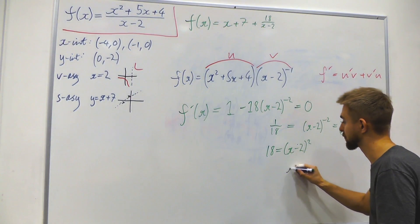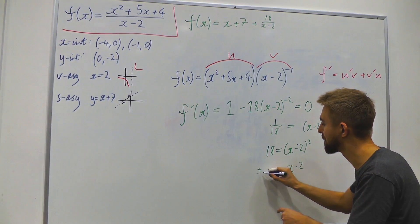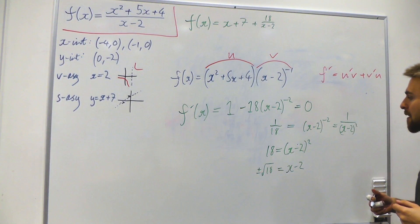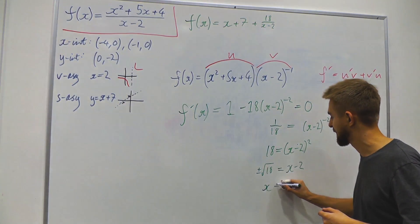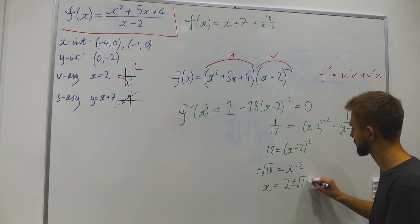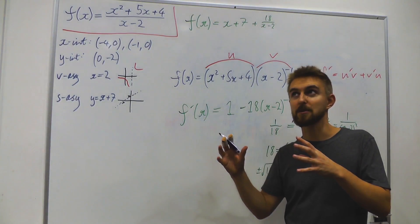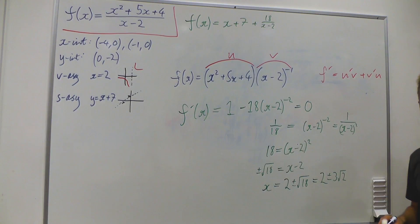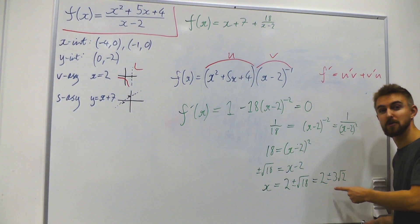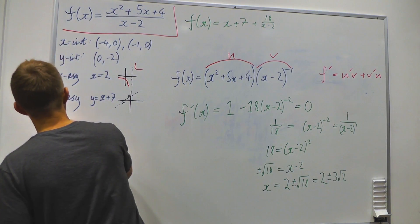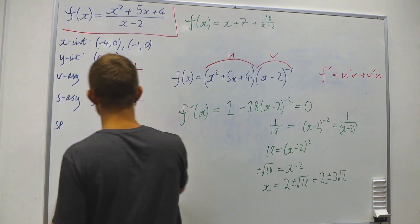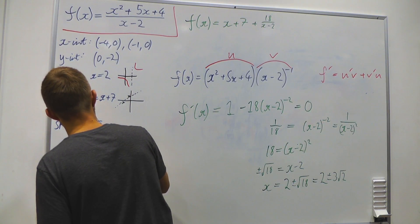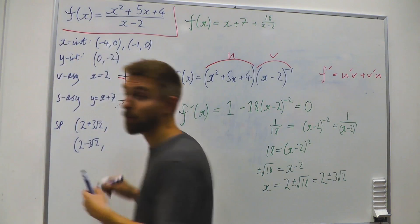Since √18 = √(9 × 2) = 3√2, we get x = 2 ± 3√2. So there are two stationary points at x = 2 + 3√2 and x = 2 − 3√2. We add these to the treasure chest. We also need the corresponding y-values, so we substitute back into the function.